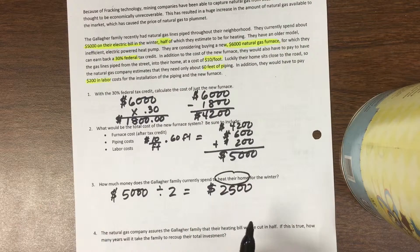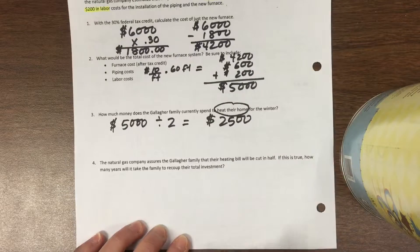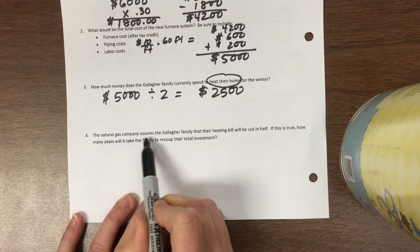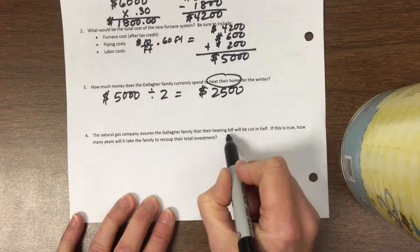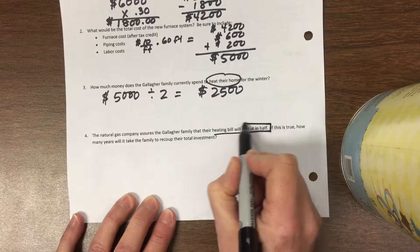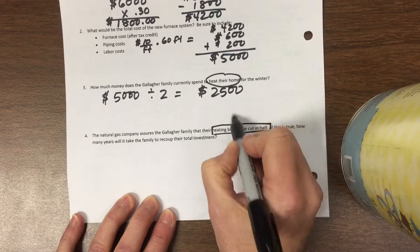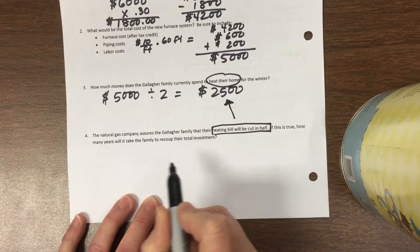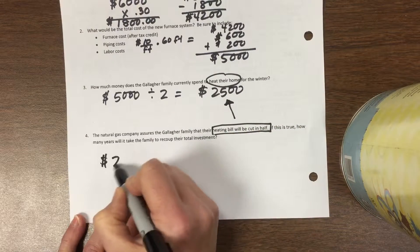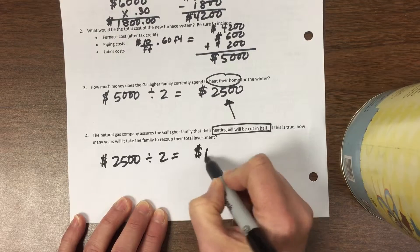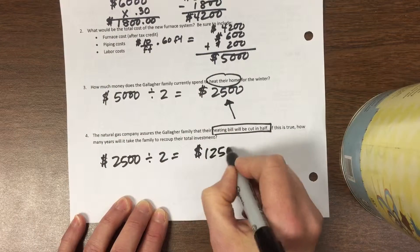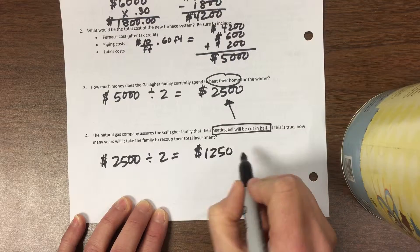The natural gas company assures the family that their heating bill will be cut in half. So if I take this $2,500 and divide that by 2, they would only be paying $1,250 if their bill got cut in half.